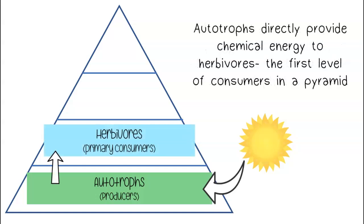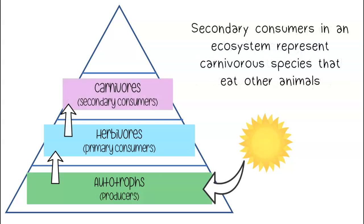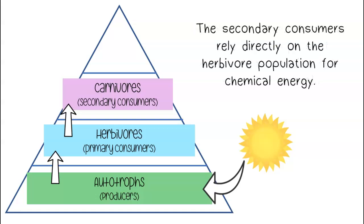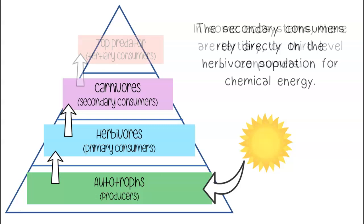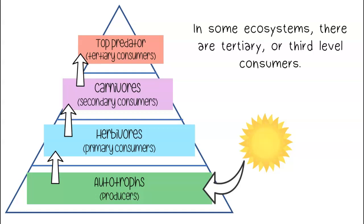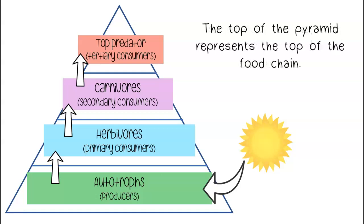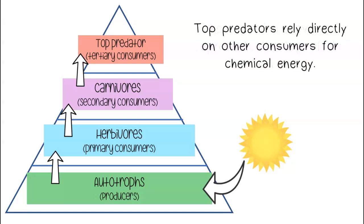Autotrophs directly provide chemical energy to herbivores, the first level of consumers in a pyramid. Secondary consumers represent carnivorous species that eat other animals, and rely directly on the herbivore population for chemical energy. In some ecosystems, there are tertiary or third level consumers. The top of the pyramid represents the top of the food chain, where top predators rely directly on other consumers for chemical energy.